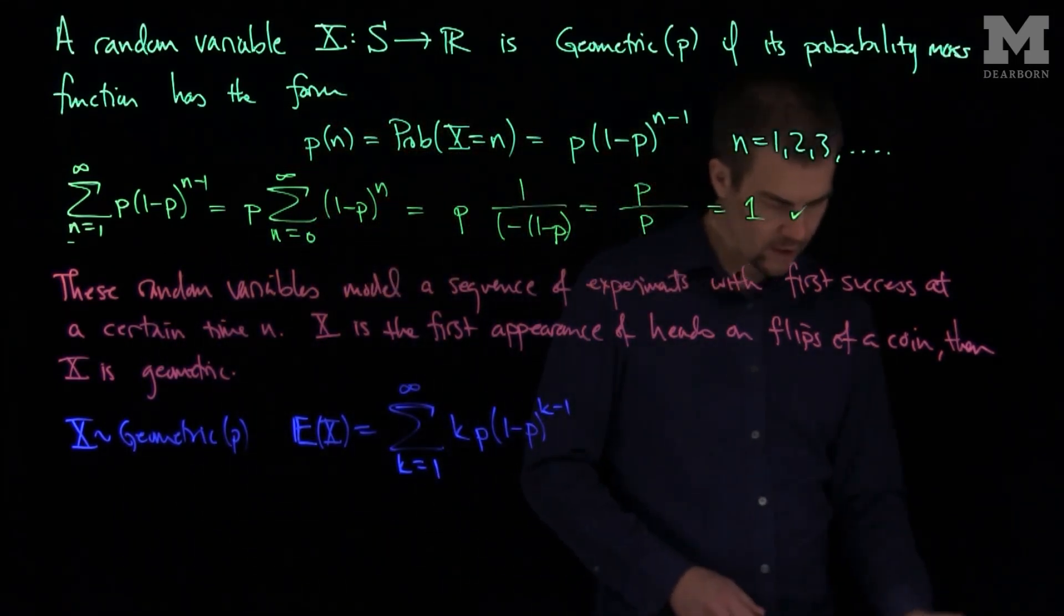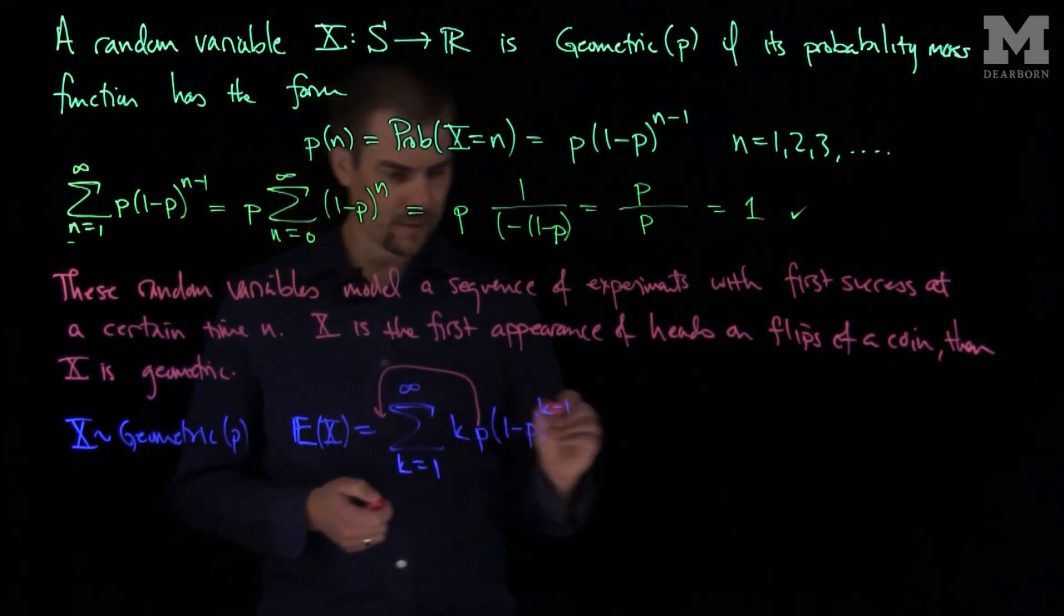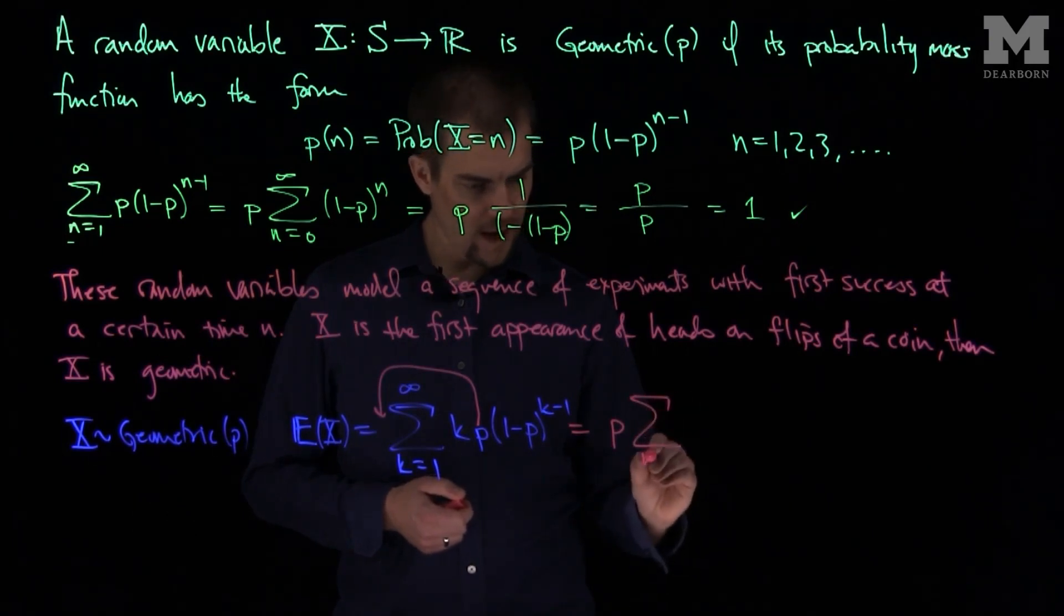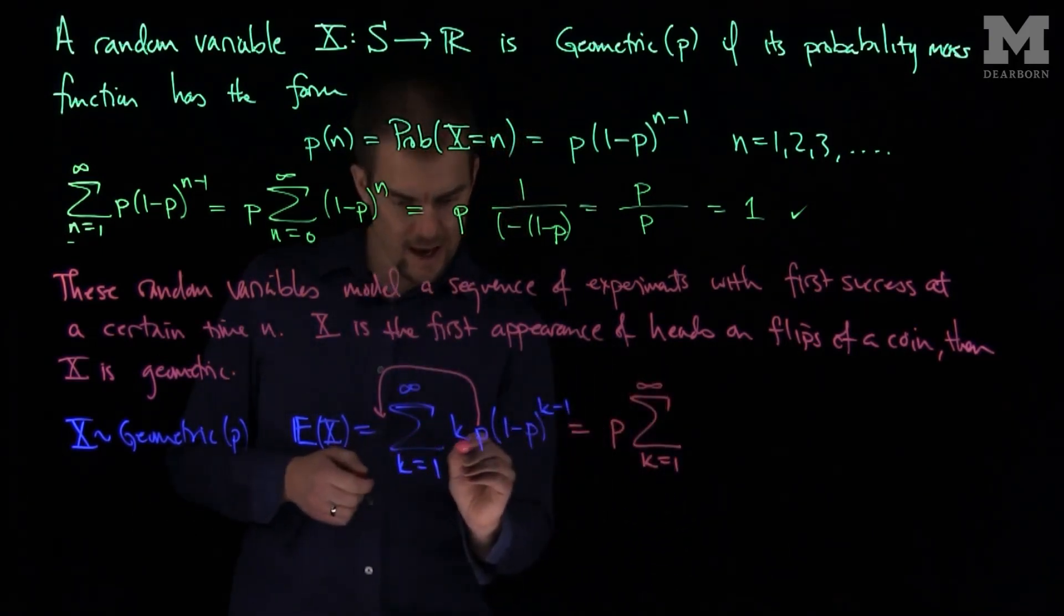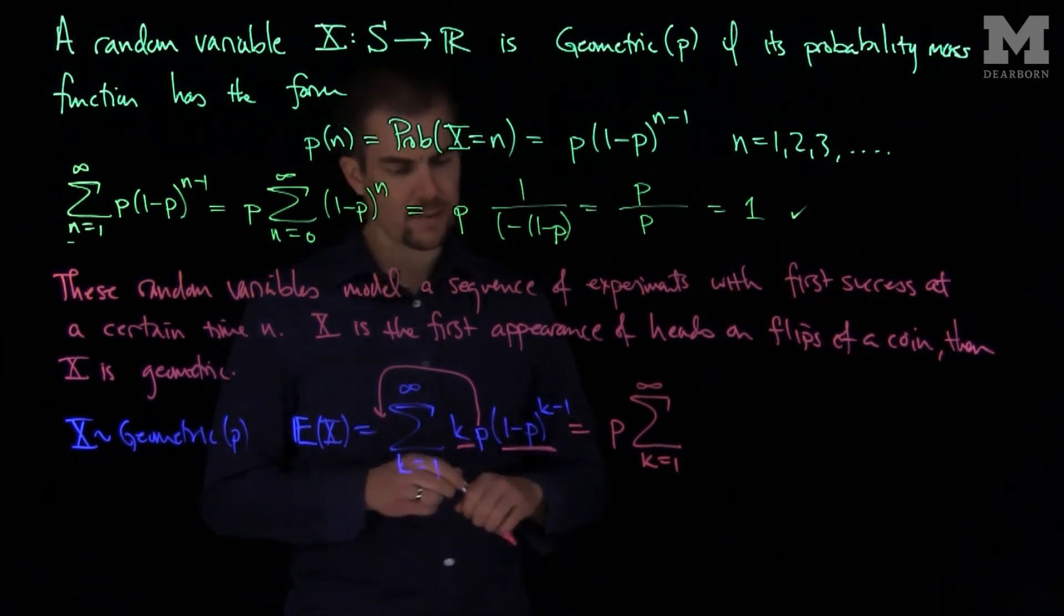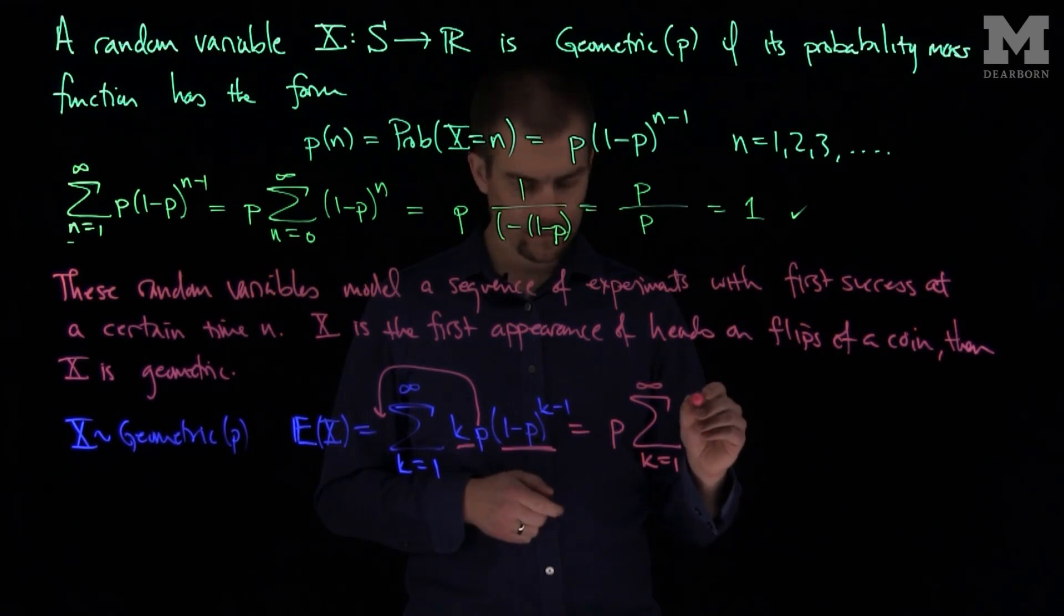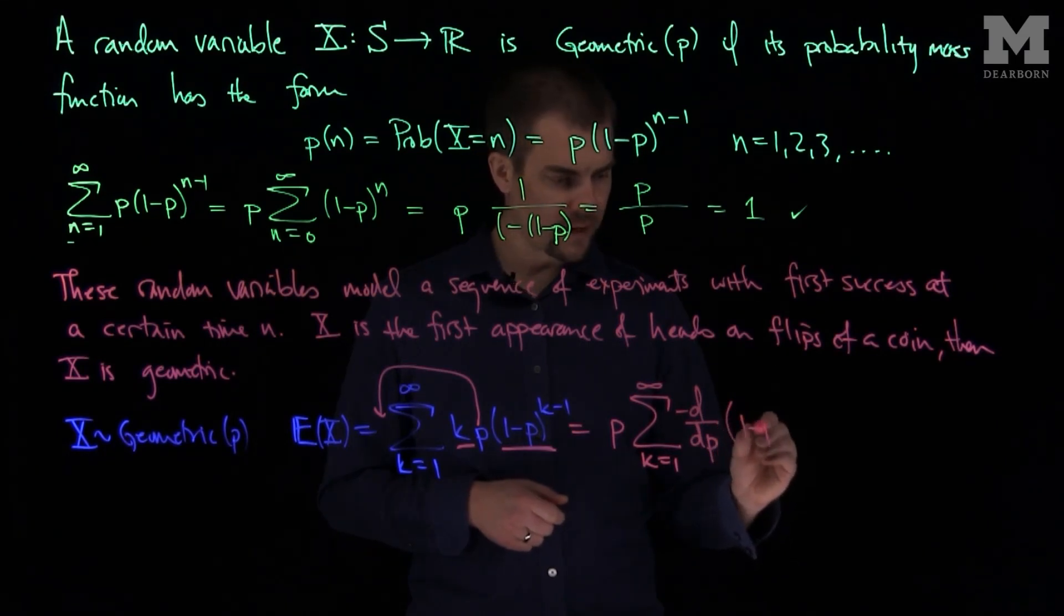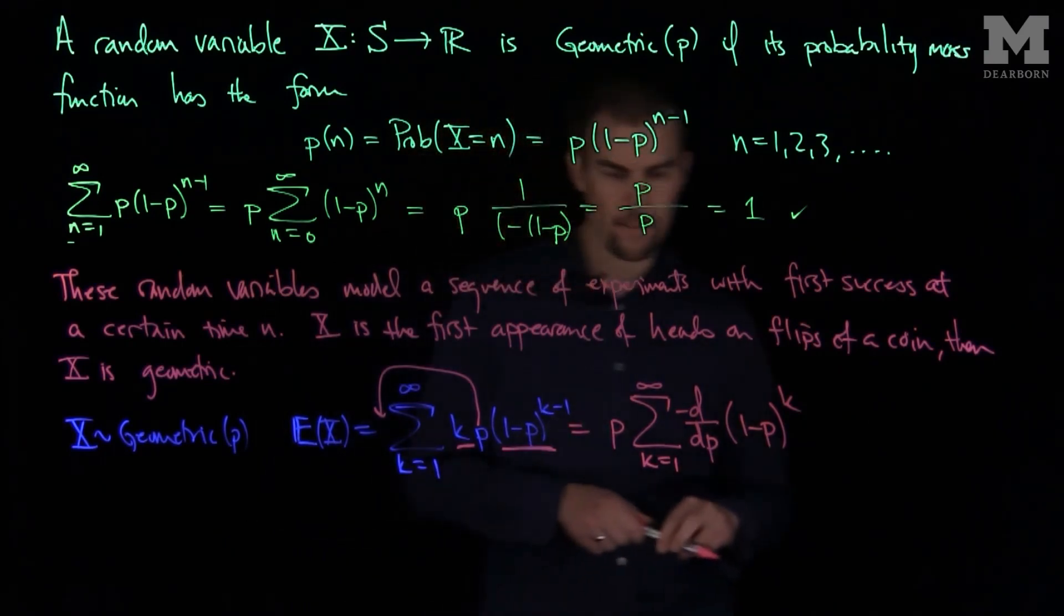And so what we can do now is we can observe that I can take this p out of the summation. So this will be p times the sum, k goes from 1 to infinity, and then I have this k times (1-p) to the k minus 1. What that is, is that's the derivative with respect to p, with a negative sign, of (1-p) to the power k.